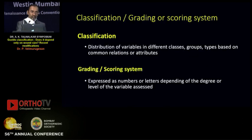In the next one hour we will be hearing more about open injuries, their classes, types, and scores. A classification system distributes variables into various classes based upon their common attributes, while a scoring system awards numbers or letters depending upon the degree or level of the variable assessed.